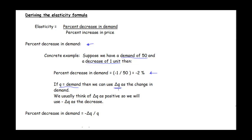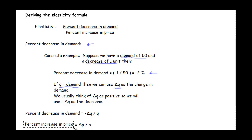We usually think of delta Q as a positive quantity, so in order to represent a decrease, we make it negative: negative delta Q over Q. And the percent increase in price, using the same idea, is delta P over P. We don't need a negative with this one because we're talking about an increase in price.